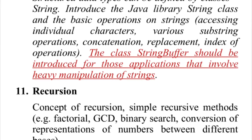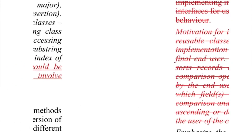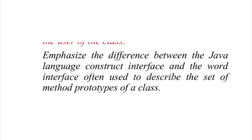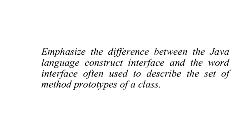Now let us move to changes in section C. The first major change is that interfaces are now only there in the syllabus as a concept, meaning that you won't be required to use them in implementation. You will not need to declare and implement interfaces in your program. You are just required to know what interfaces are and the difference between the language construct interface and the word interface often used to describe the set of method prototypes of a class.